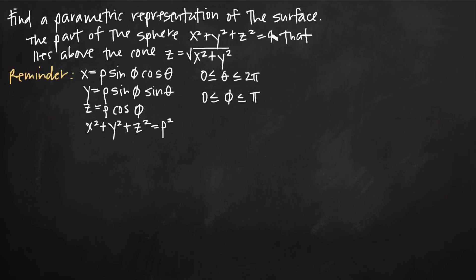Because we are dealing with a sphere here, what we can do is convert the equation of this sphere into parametric equations given by x, y, and z, which are already in terms of the parameter values rho, phi, and theta. This is really convenient because we have a sphere and we have these conversion formulas to spherical coordinates, and they'll give us parametric equations right away because they're defined for x, y, and z. The parametric equations are in terms of rho, phi, and theta — three parameter values.